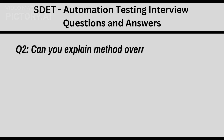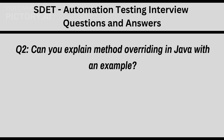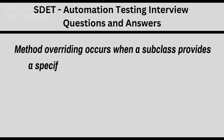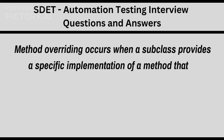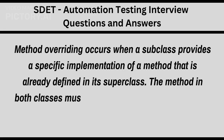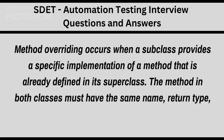Q2: Can you explain method overriding in Java with an example? Method overriding occurs when a subclass provides a specific implementation of a method that is already defined in its superclass. The method in both classes must have the same name, return type, and parameters.